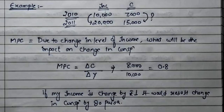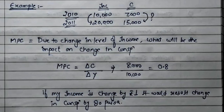Let's look at a numerical example. In 2010, income is ₹10,000 and consumption is ₹7,000. In 2011, income is ₹20,000 and consumption is ₹15,000. We need to find the change in consumption due to the change in income. The formula is change in C upon change in Y.